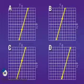Which one has the y-intercept at 0, negative 2? That is choice A.